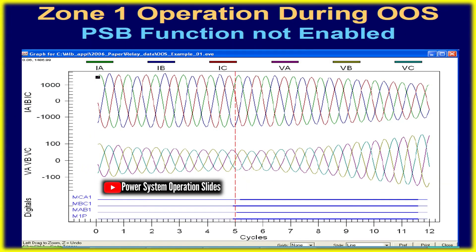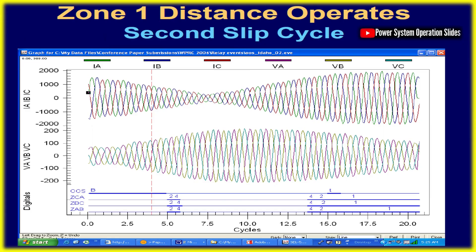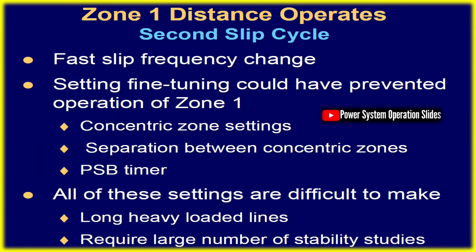Distance relays, which measure positive sequence impedance, are particularly sensitive to power swings. When an OOS event occurs, the impedance locus may enter the relay's operating region. Zone 1 elements, which operate without delay, are highly sensitive, while Zone 2 elements, used in pilot relaying schemes, are also prone to activation. Conversely, backup zones, due to their time delays, often remain unaffected by power swings.